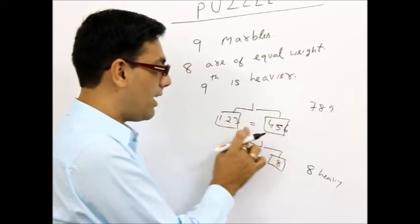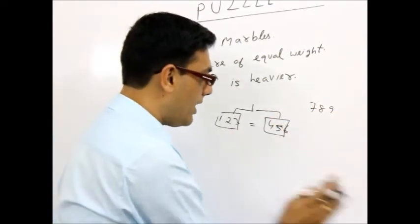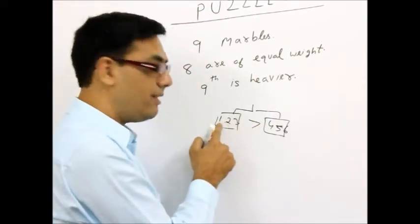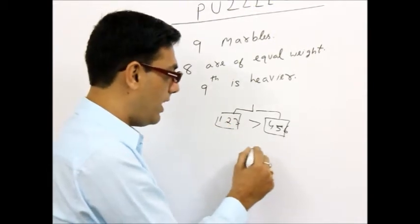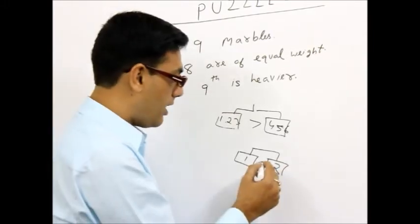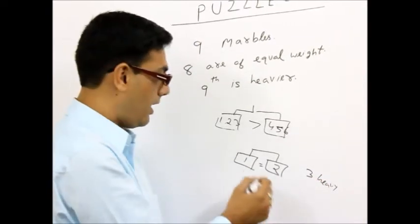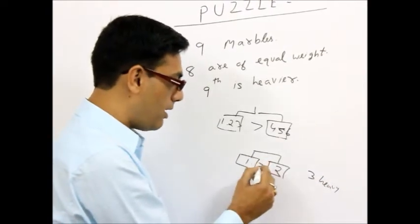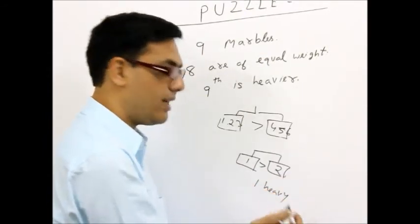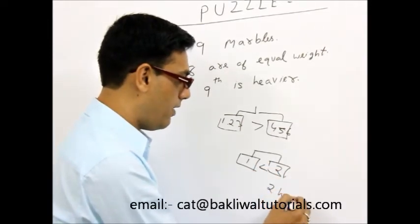If the 1, 2, 3 marble is exactly the same as 4, 5, 6 marble, I am sure the answer lies here. The other case, if it comes out as greater, then I am sure that my answer lies in 1, 2, 3. So in the next reading, I will put 1 here and I will put 2 here. If they come out equal, the answer is 3 heavy. If 1 marble is greater than the second marble, the answer is 1 heavy. And finally, if this is like this, then my answer is 2 heavy.